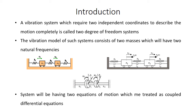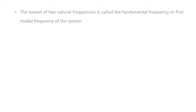A 2 degree of freedom system will have two equations of motion, which will be treated as a coupled differential equation. The lowest of the two natural frequencies is called the fundamental frequency or first mode frequency of the system.